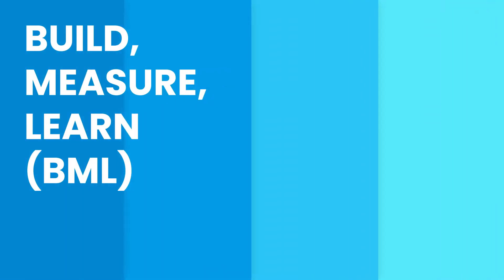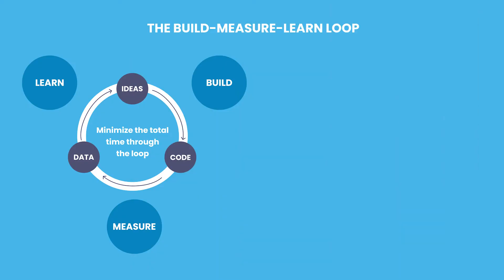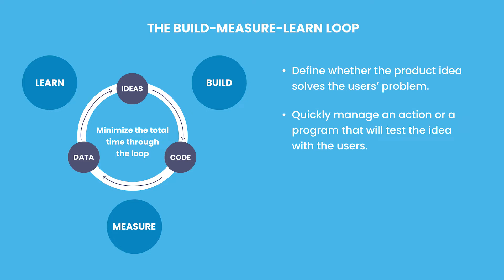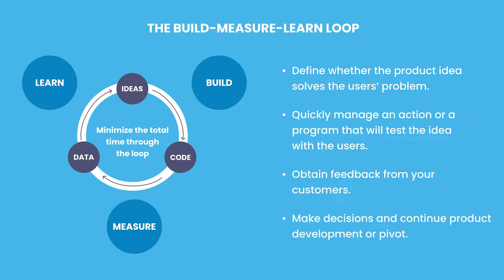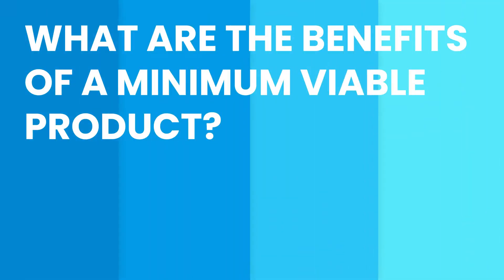Build, measure, learn — this is another lean startup methodology which will help you on the way. The main points of the build-measure-learn loop are: define whether the product idea solves the user's problem; quickly manage an action on a program that will test the idea with users; obtain feedback from your customers; and make decisions to continue product development or pivot.